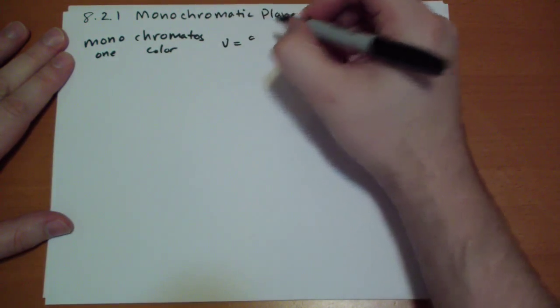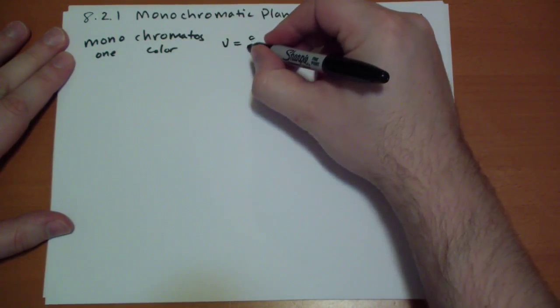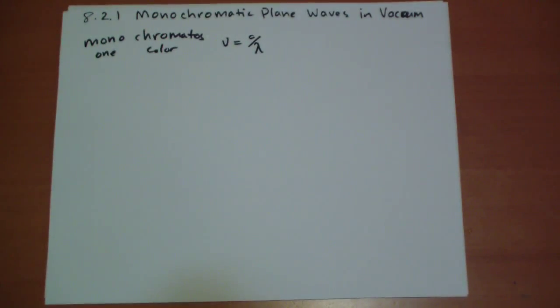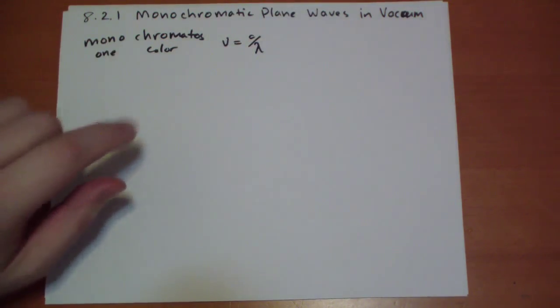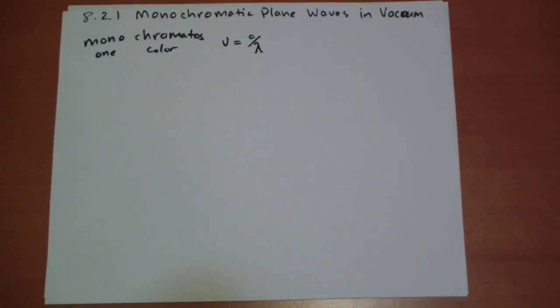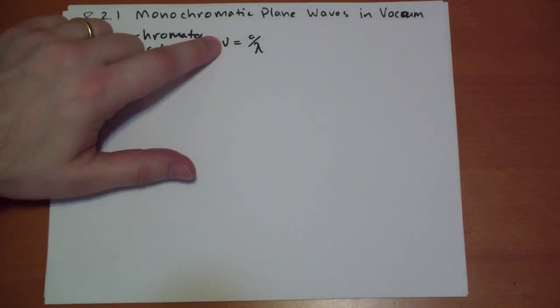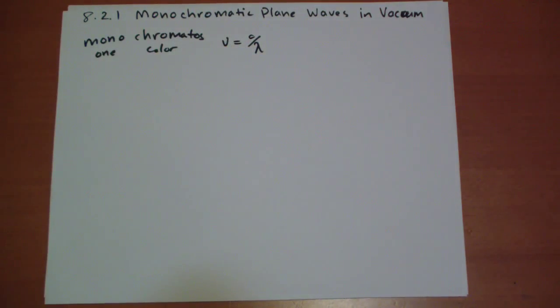In this case speed of light, because we're dealing with vacuum, over lambda, the wavelength. So, as the wavelengths get longer, the frequencies get shorter. And as the frequencies get higher, the wavelengths get shorter.